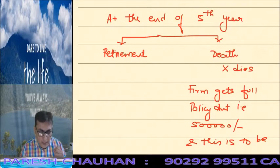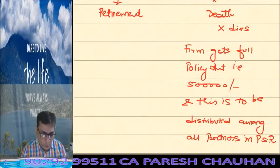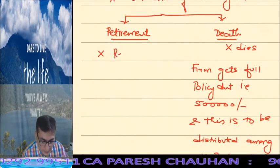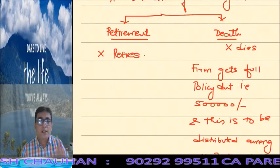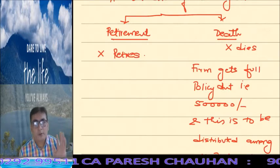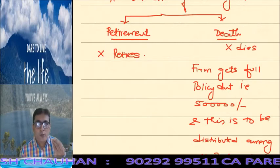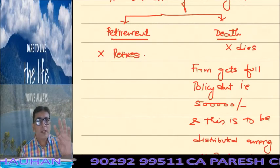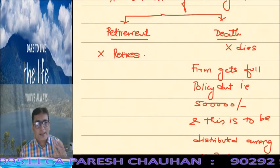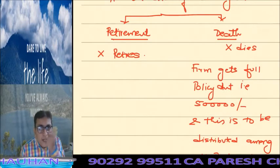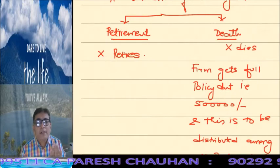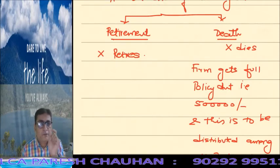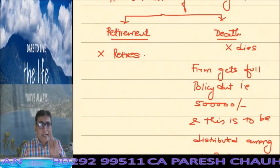Now let us understand the difference between retirement and death of a partner. In the case of retirement — suppose X retires — the insurance company does not pay the full policy amount. If insurance companies paid the full policy amount on retirement, they would all close down within six months, because everyone would form a partnership firm, have a partner retire, and collect the policy amount. So in case of retirement, the firm does not get the full policy amount.